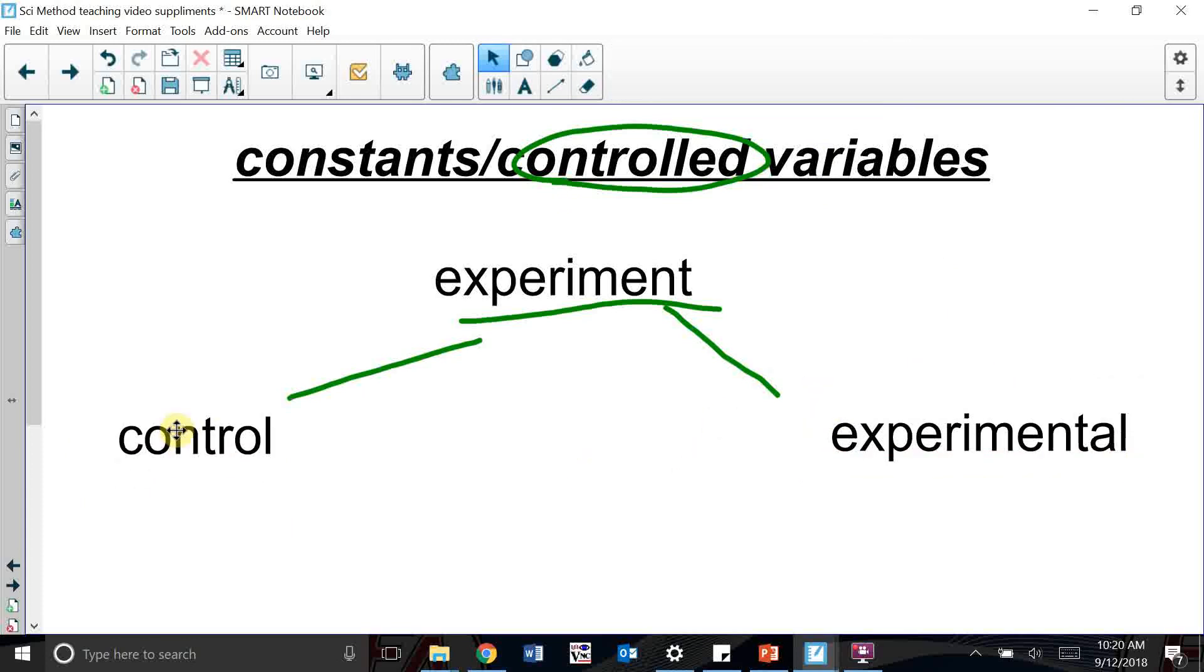Remember, we only want to make sure to change one thing between my experimental group and my control group. We're only changing one thing at a time. But everything else needs to remain the same. Those things that remain the same between those two groups, those are your constants or your controlled variables.